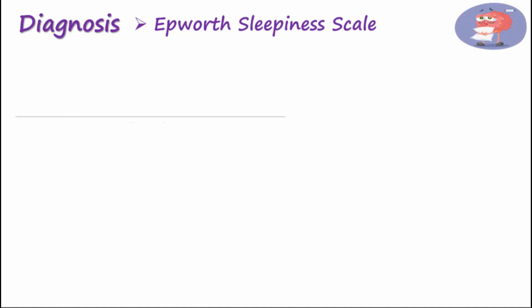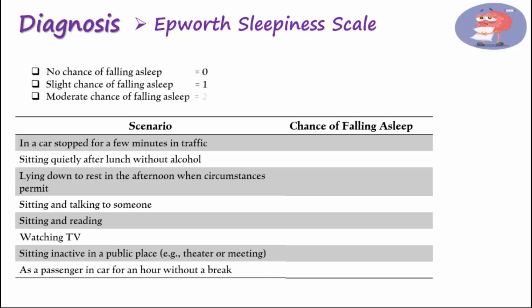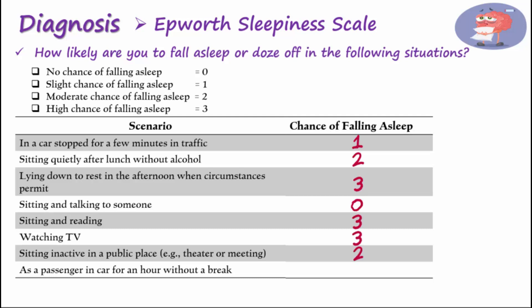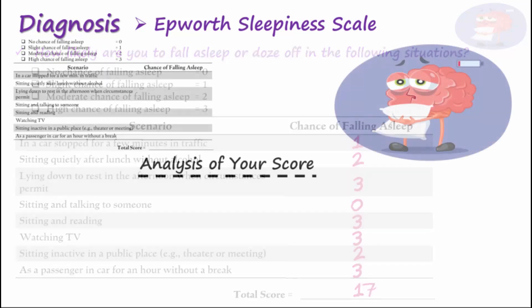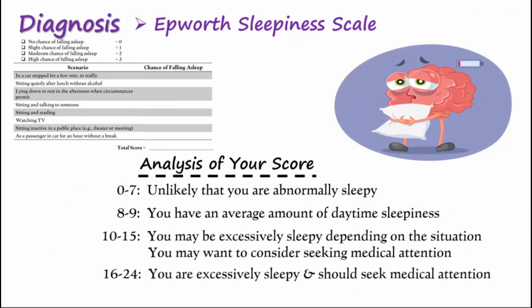The Epworth sleepiness scale is a subjective self-assessment for determining a patient's sleepiness. The patient considers eight situations and rates their tendency to become sleepy on a scale from zero, which is no chance of falling asleep, to three, which is a high chance of falling asleep. The numbers are added up and scored on a scale of zero to 24.